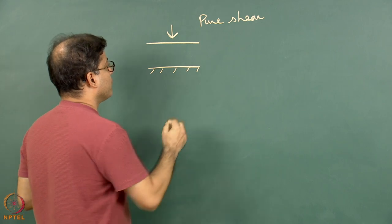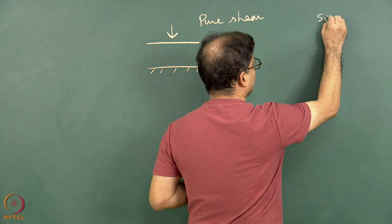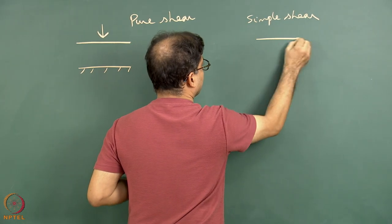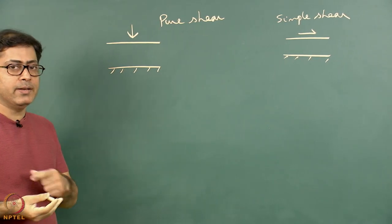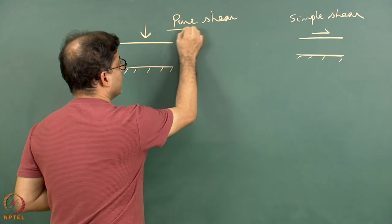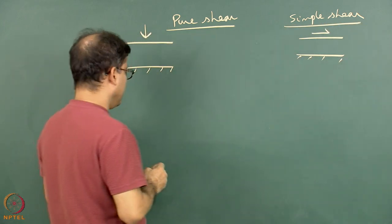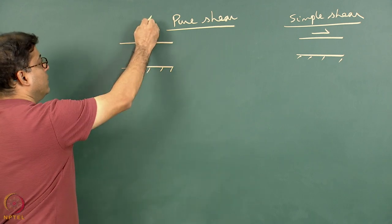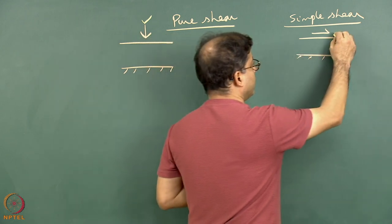Pure shear is one extreme of deformation. The other extreme is simple shear, where the boundary moves parallel to itself, or both boundaries are static and Poiseuille flow takes place. In reality, shear zones are neither completely pure shear nor completely simple shear. KVN studies have shown there is not only compression perpendicular to the boundary but also boundary-parallel movement.